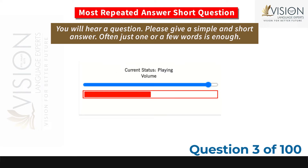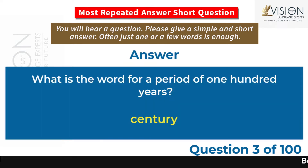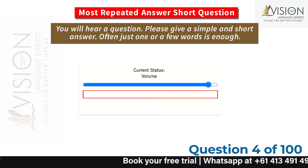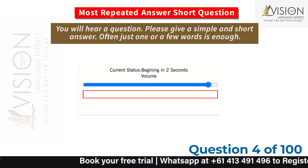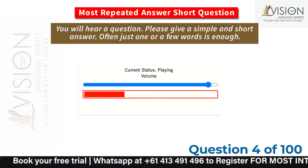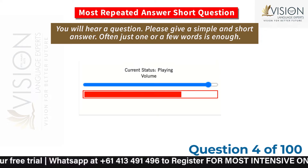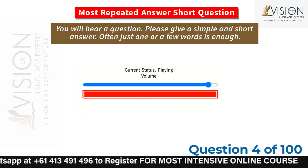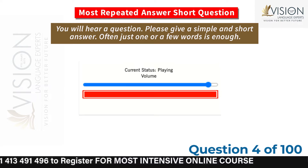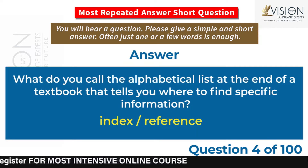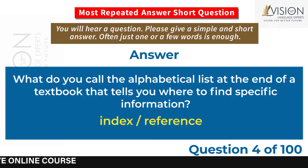What is the word for a period of 100 years? Century. What do you call the alphabetical list at the end of a textbook that tells you where to find specific information? Index, reference.